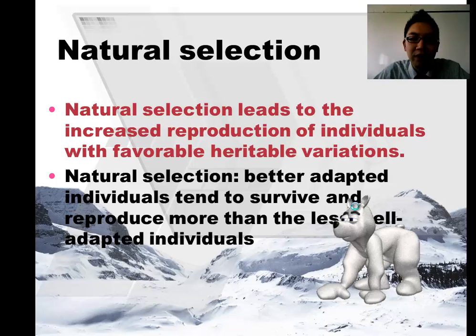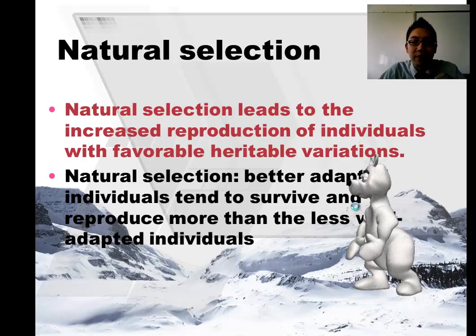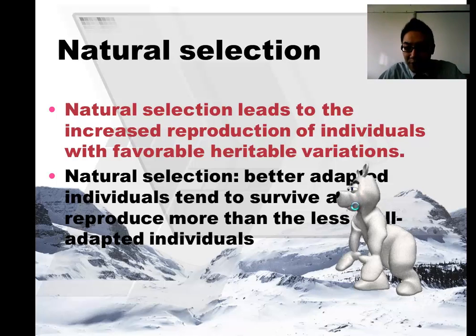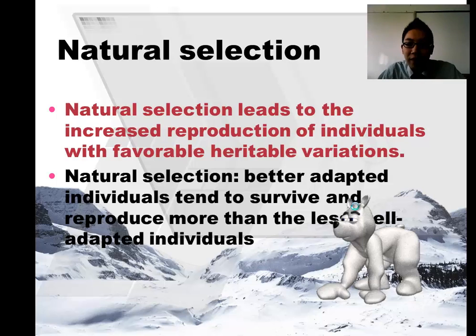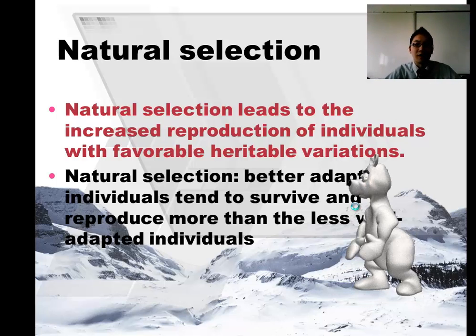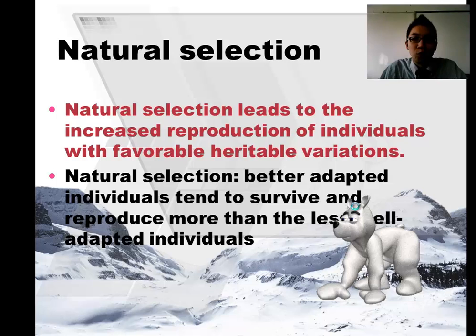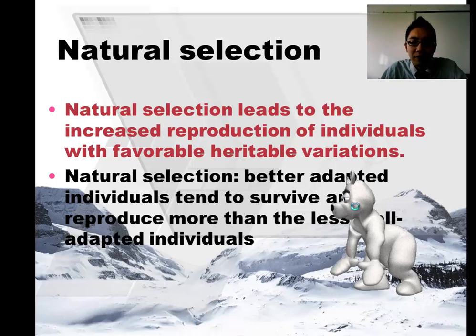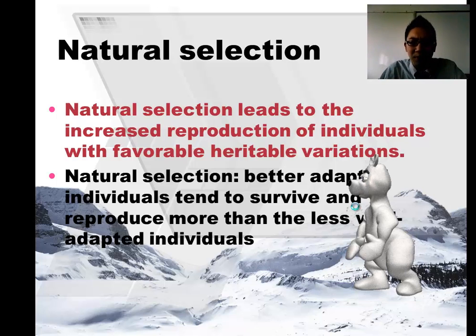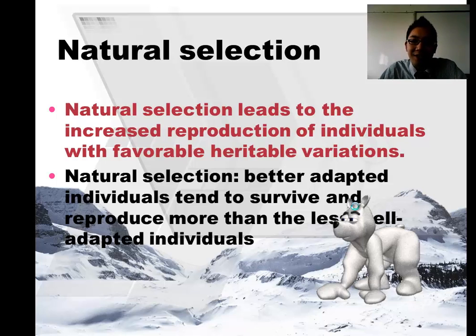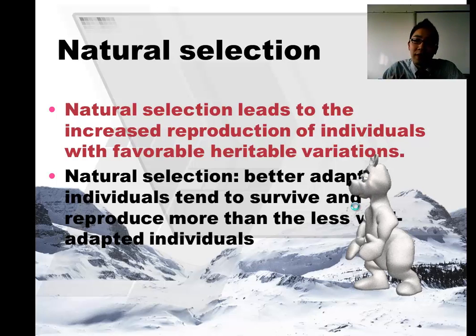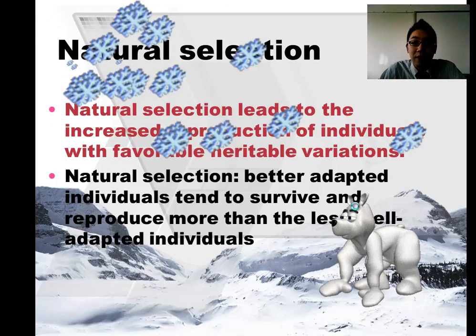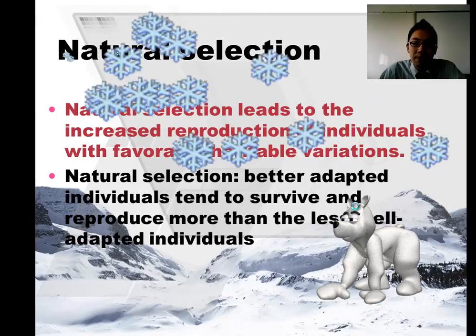Better-adapted individuals tend to survive and reproduce more than less well-adapted individuals. The key is that these traits must be heritable — encoded in the DNA. Take a polar bear: white fur is well-adapted to snowy environments. Put a polar bear in the middle of a jungle and it'll have a really tough time, because prey will spot it from a long distance. So don't dismiss traits that seem odd — depending on the environment, they could be a huge advantage.